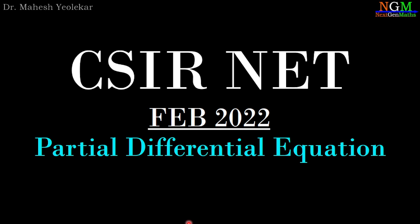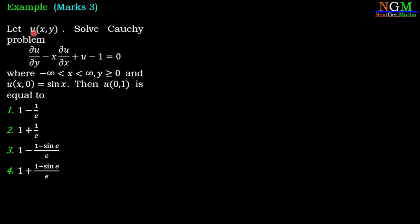In this video, we are going to discuss a problem from GATE 2022, Problem of Partial Differential Equation. The question is: let u(x,y) solve the Cauchy problem ∂u/∂y − x·∂u/∂x + u − 1 = 0, where −∞ < x < ∞, y ≥ 0 and u(x,0) = sin x. Then u(0,1) is equal to? The four options are: (1) 1 − 1/e, (2) 1 + 1/e, (3) 1 − (1 − sin e)/e, and (4) 1 + (1 − sin e)/e.